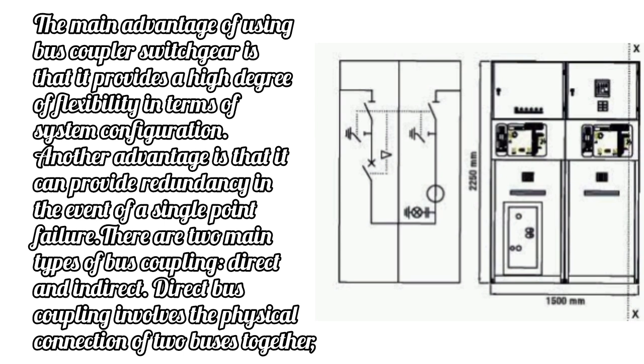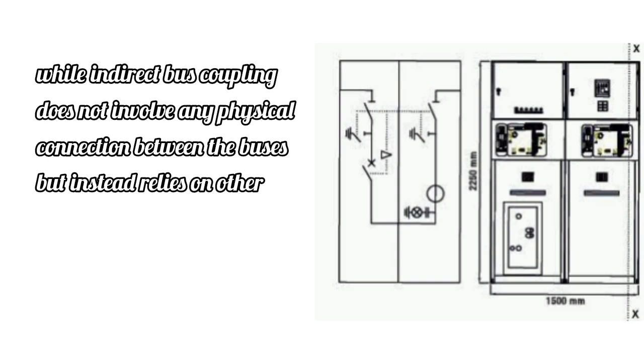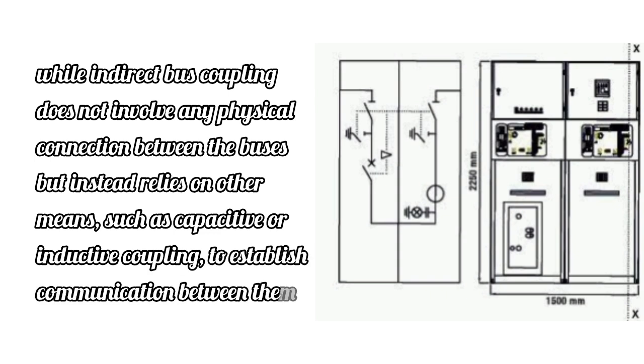There are two main types of bus coupling: direct and indirect. Direct bus coupling involves the physical connection of two buses together, while indirect bus coupling does not involve any physical connection between the buses but instead relies on other means, such as capacitive or inductive coupling, to establish communication between them.